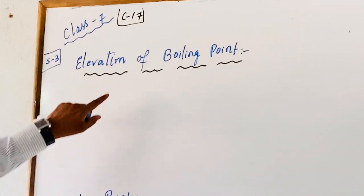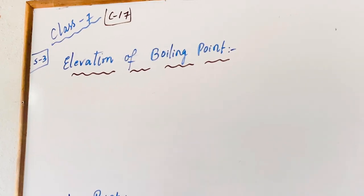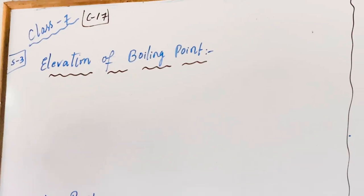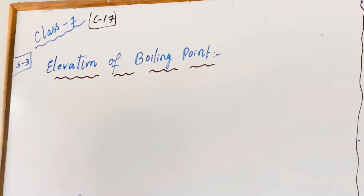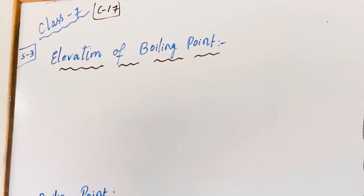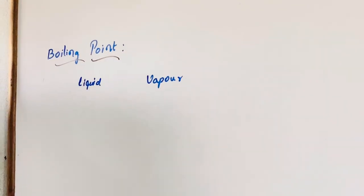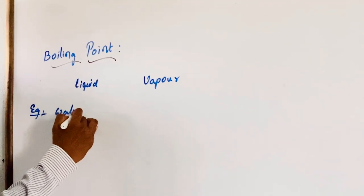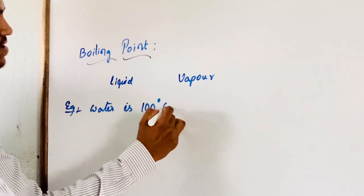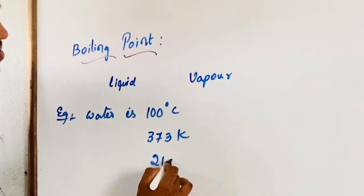This is one of the colligative properties, that is elevation of boiling point. First of all, what is the definition of boiling point? The temperature point at which the liquid converts into vapour is known as boiling point. For example, the boiling point of water is 100 degrees Celsius, 373 Kelvin, or 212 Fahrenheit.